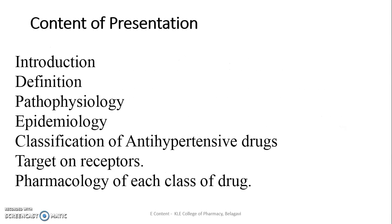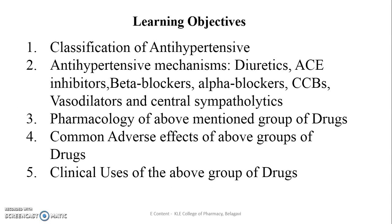The contents include introduction, definition, pathophysiology of hypertension, epidemiology, classifications of antihypertensive drugs, receptors, drug-receptor actions, and pharmacology of each drug class. The learning objective is that after completion of this topic, the student will be able to describe classifications of antihypertensive drugs and their mechanisms — including diuretics, ACE inhibitors, beta blockers, alpha blockers, calcium channel blockers, vasodilators, and central sympatholytic agents — along with common adverse effects and clinical usage.